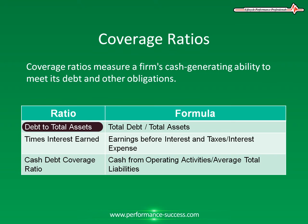Debt to total assets measures the percentage of total assets financed by creditors. The debt to total assets ratio is very similar to the debt equity ratio. A ratio under one means a majority of assets are financed through equity, while above one they are financed more by debt. A low debt asset ratio means that assets are financed more through equity rather than debt.